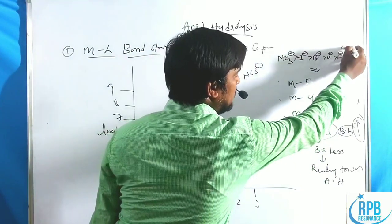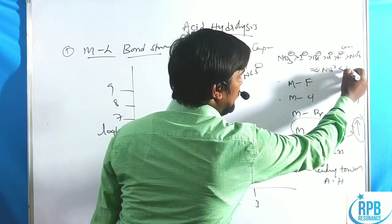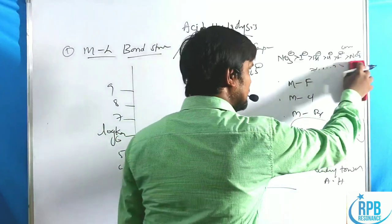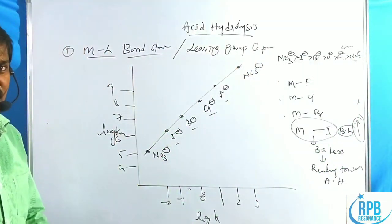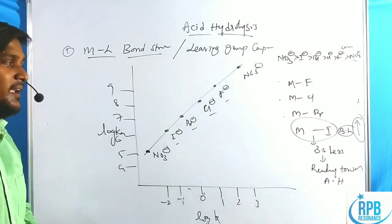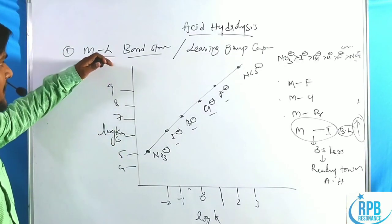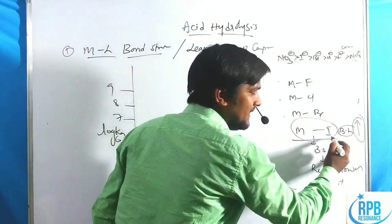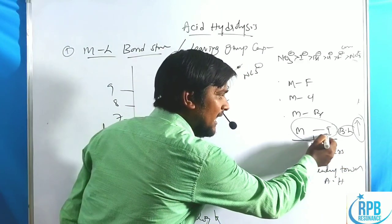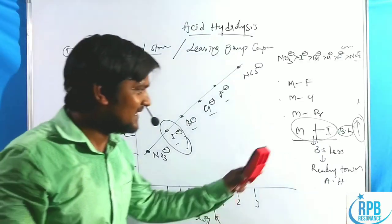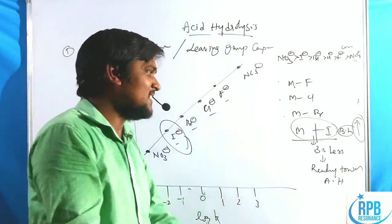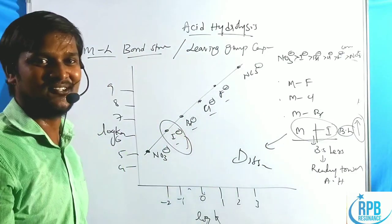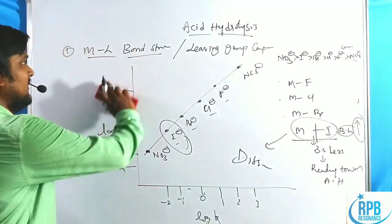The linear free energy graph can provide more information for additional ligands after NCS⁻, including NH₃, carboxylate groups, and OH⁻. This factor - metal-ligand bond strength - shows that when the metal-leaving group bond dissociates, it follows the dissociative mechanism. This is the first proof that acid hydrolysis follows the dissociative mechanism.